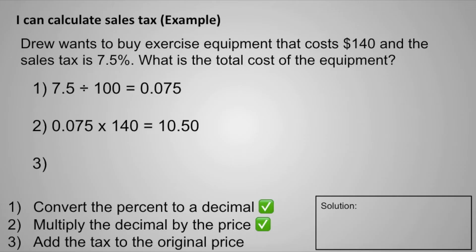And the final step is to add the tax to the original price. 140 plus $10.50 is equal to $150.50. So the total price with tax will be $150.50.